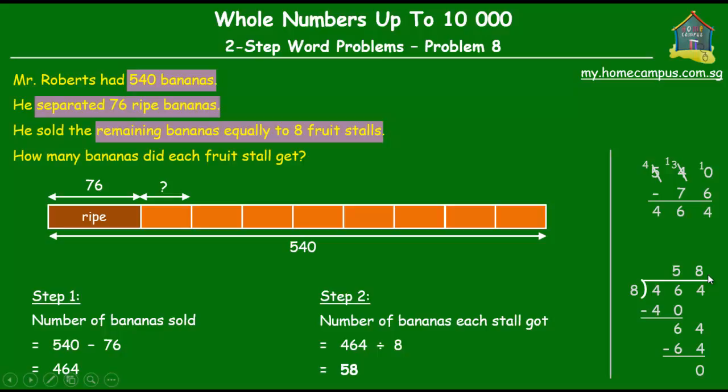So each stall got 58 bananas. All right, now if you are not very sure about how to do division, then please check out the tutorials we did on division with regrouping and that will help you understand the detailed steps of division.